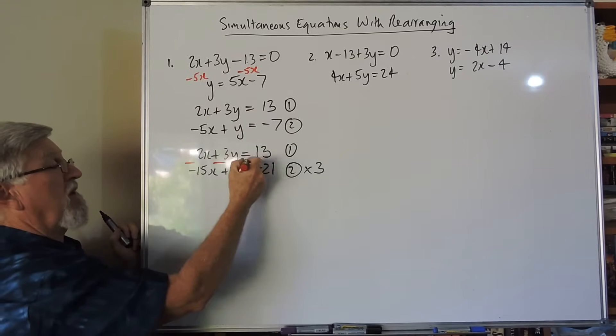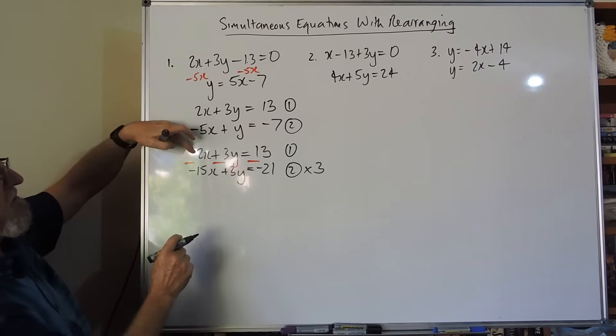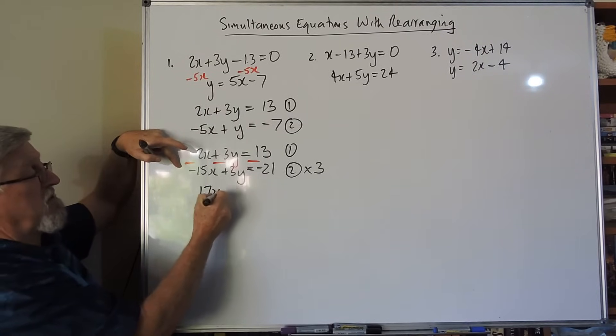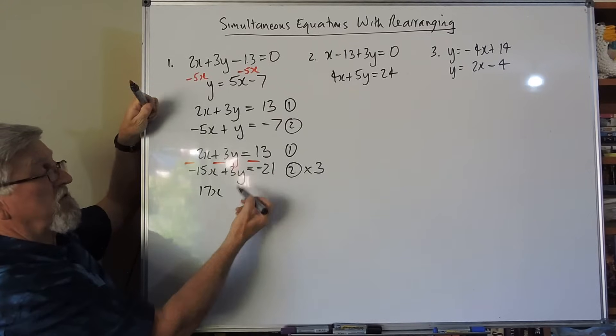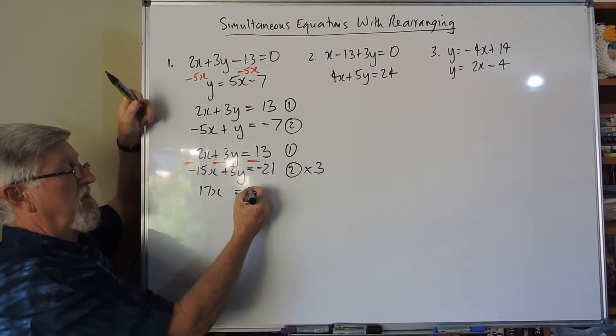They are the same sign and the same size, and then I can subtract. Let's have a look at what the question's done. The 2x plus a 15x is a 17x. The 3y minus a 3y is gone. 13 plus 21 is 34.